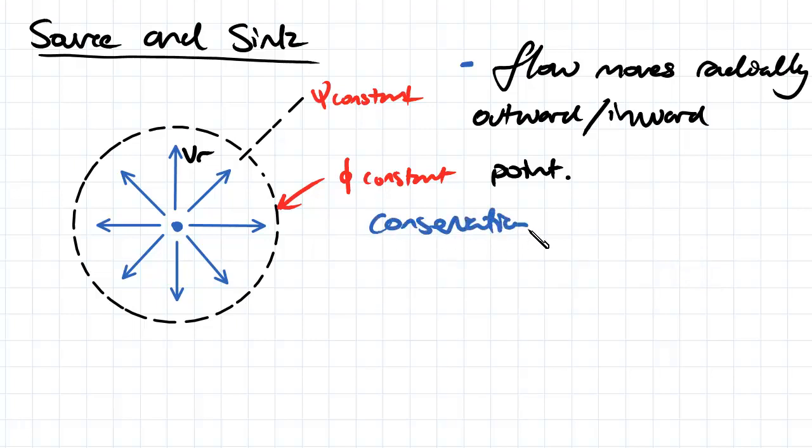We're going to be looking at conservation of mass. Essentially, we're going to consider one of these concentric circles, which clearly has a circumference of 2πr.